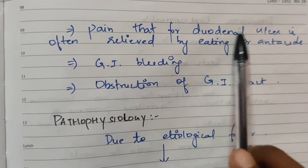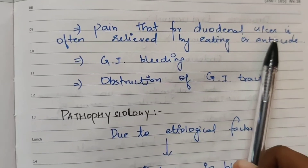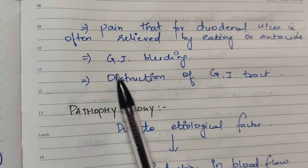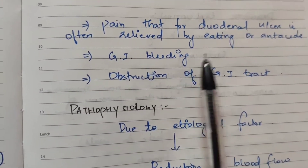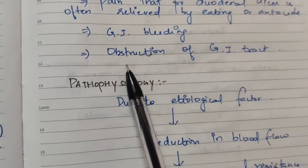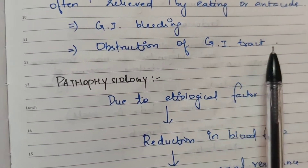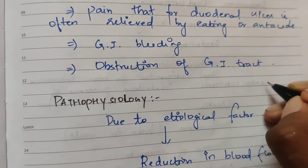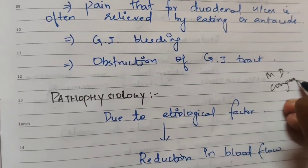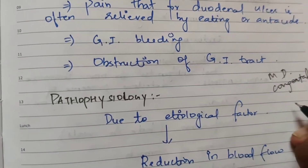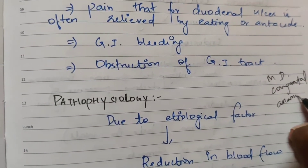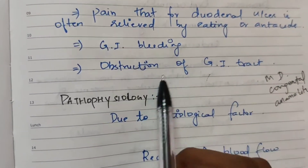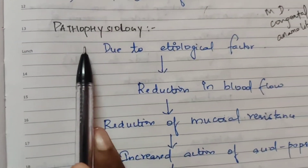This is the duodenal ulcer. Complications include GI bleeding — gastrointestinal or internal bleeding — and obstruction of the GI tract. Meckel's diverticulum is a congenital anomaly related to GI tract obstruction.